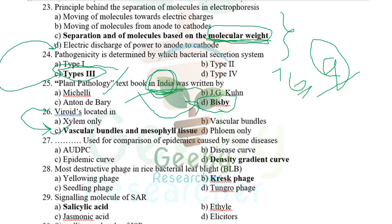The blank used for comparison of epidemics — I thought it might be density gradient curve or AUDPC; I'm not sure. The most destructive phase in bacterial leaf blight of rice is the kresek phase (kresek or wilt phase) — it is the most destructive because infection spreads systemically and the plant dies immediately.